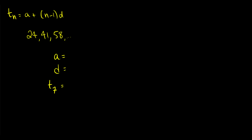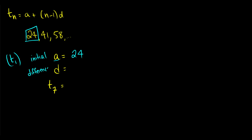So let's look at a problem. The nth term formula is a plus (n minus 1) times d. We have the series 24, 41, 58. What is our a value? The a is the initial value — some people write this as t1 instead of a; it's the same thing. So our a is 24. Now what is d? This is the difference between any two terms. We take the second term, 41, and subtract 24, and we see this is 17.